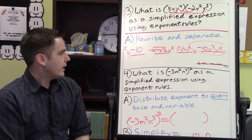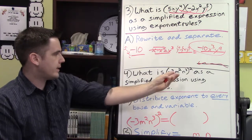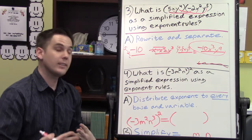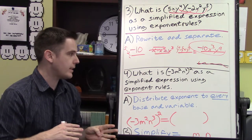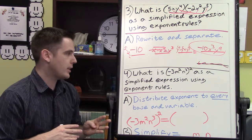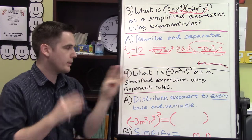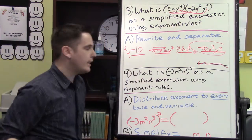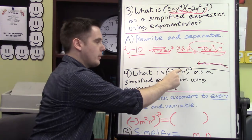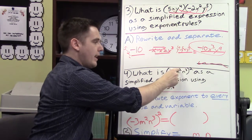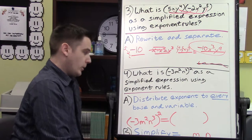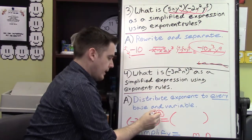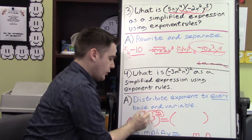Number 4. So what is this expression as a simplified expression using exponent rules? You're just going to distribute the exponents. We did something similar to this where we had maybe just m to the 2nd power in parentheses with an exponent on the outside. It's the same idea, but before we'd only have one exponent. Now we've got two different exponents and a base number. What do we do there? Well, we're just going to distribute this exponent to each one.